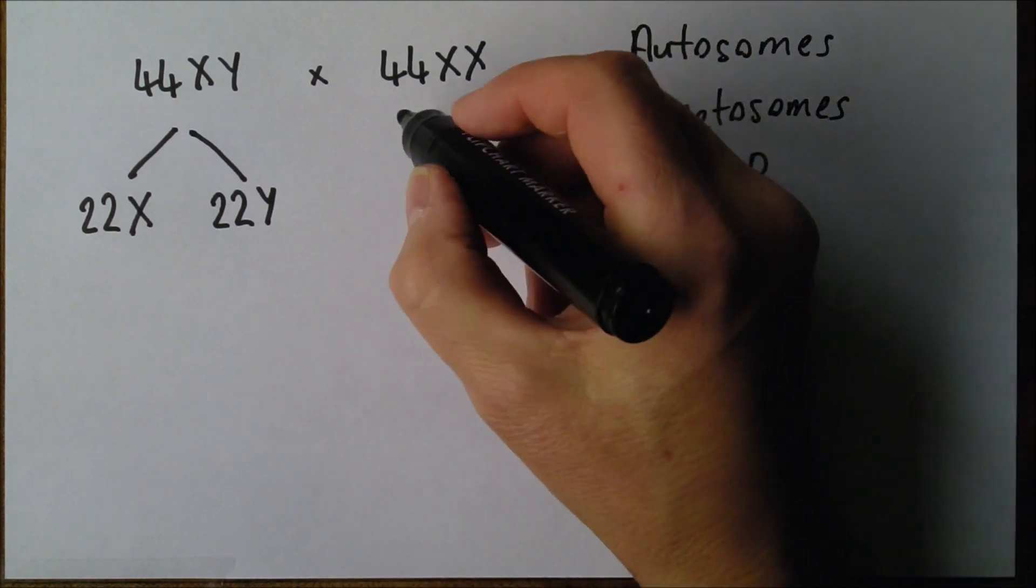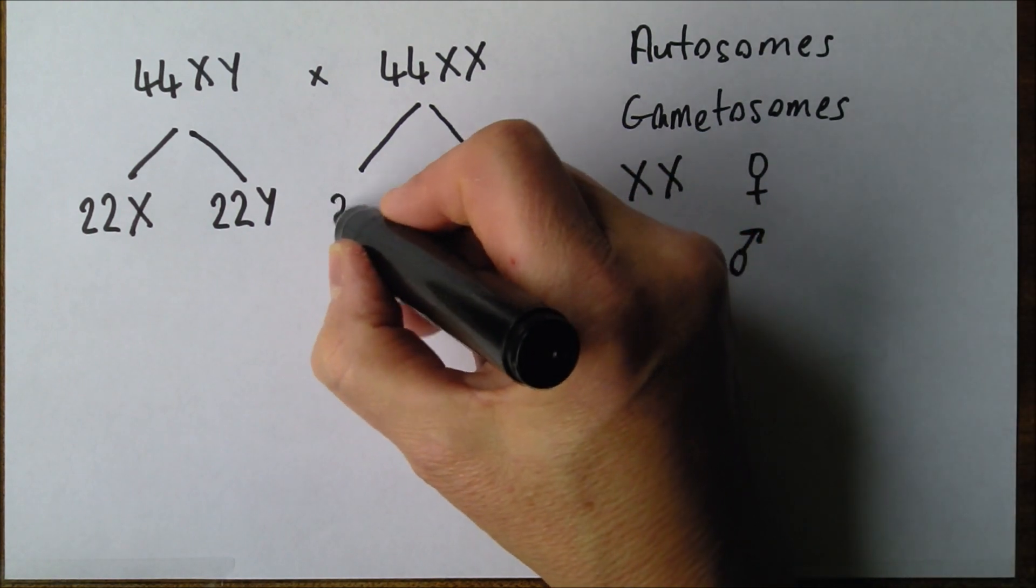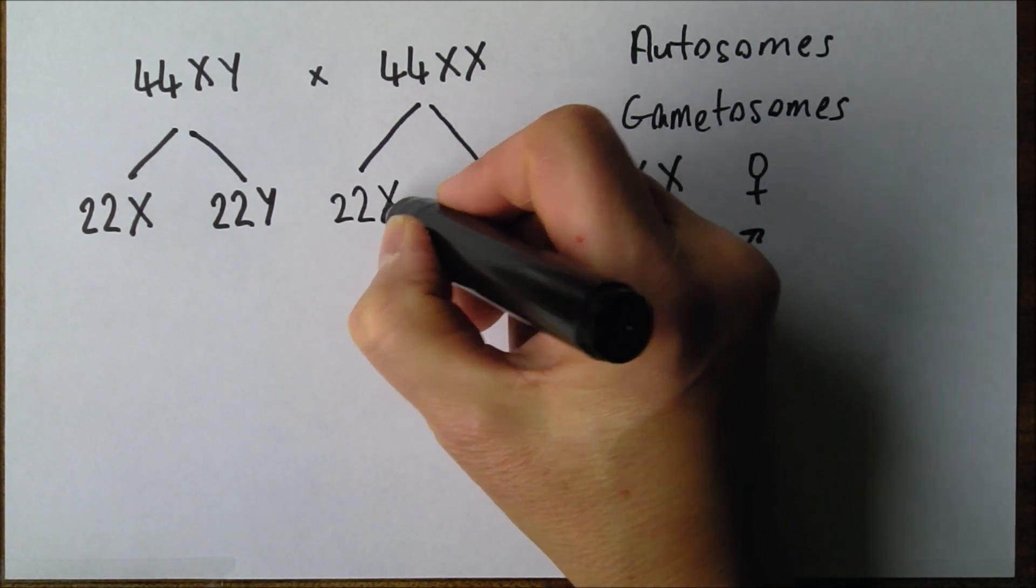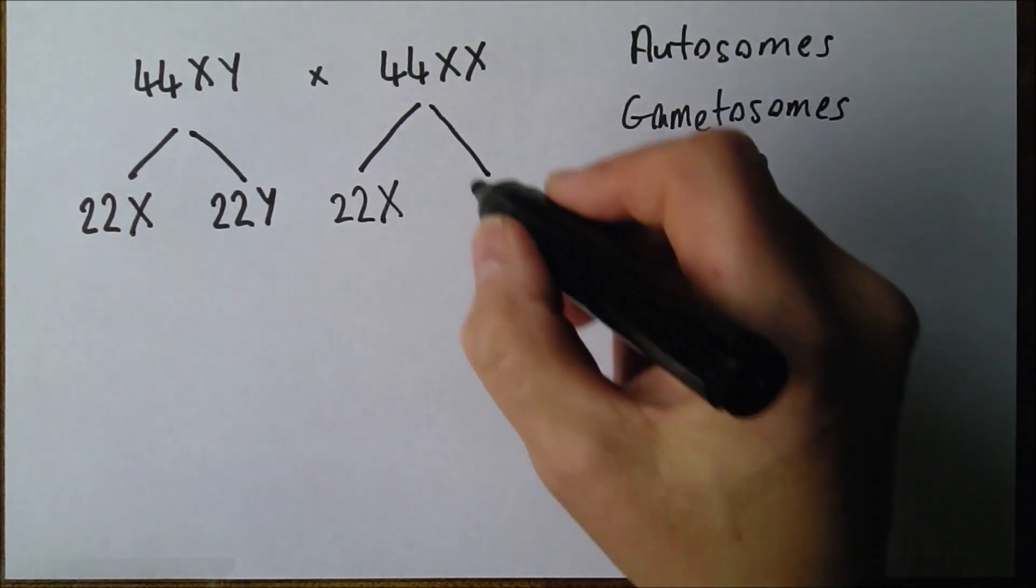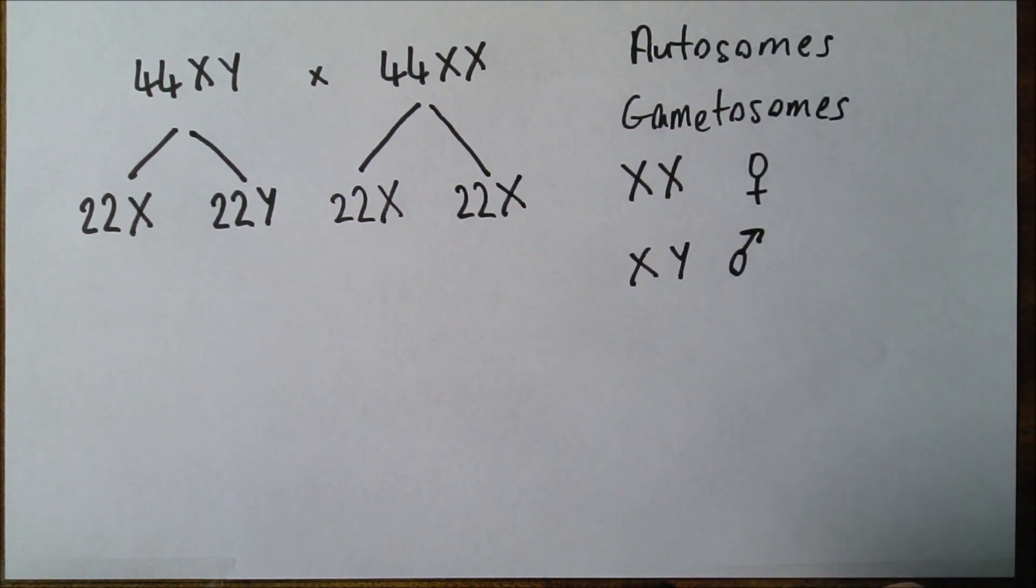And likewise for the female producing the ova, there's always going to be the 22 autosomes with an X in some of the ova, and in the other ova, 22 autosomes plus an X. Again, it's going to be the same thing.